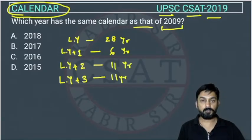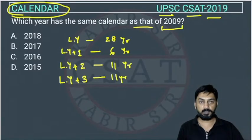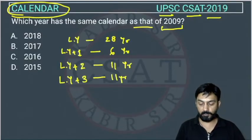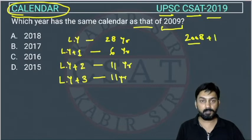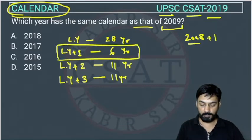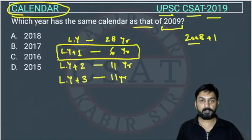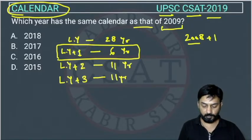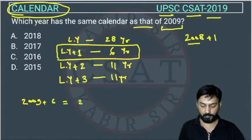If you remember this, you can solve this question in just a second. See, 2009 — since 2008 is a leap year, 2009 is leap year plus 1. So this falls in that case, meaning the calendar will repeat after 6 years. So 2009 plus 6 equals 2015.